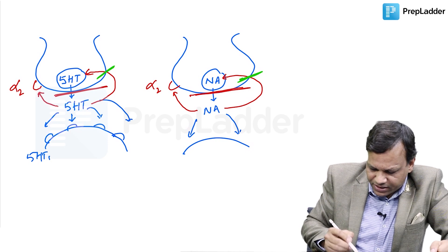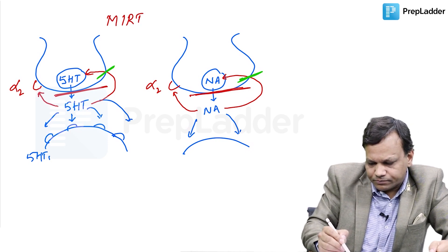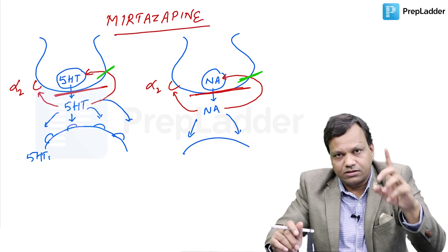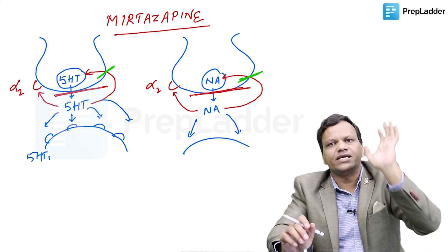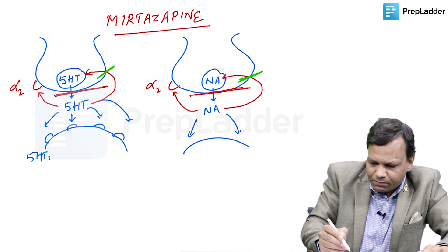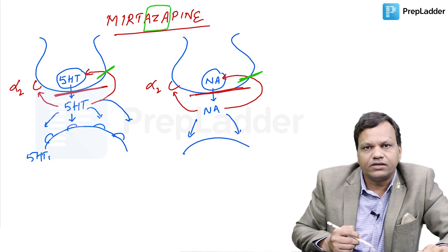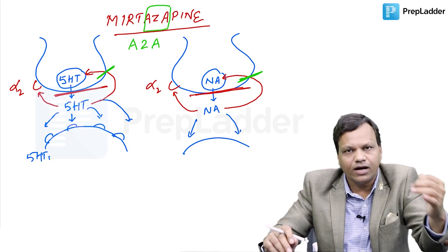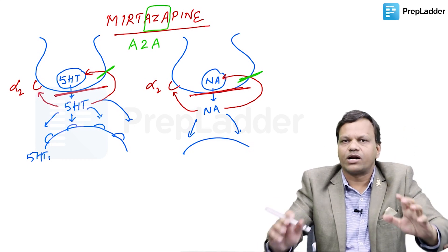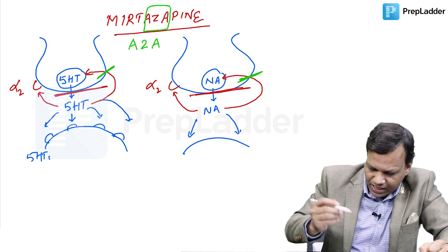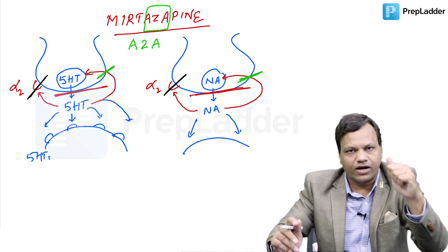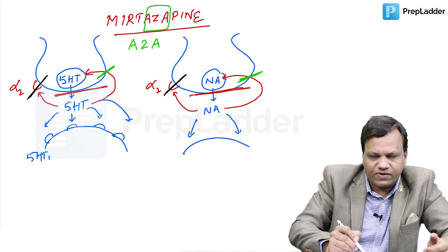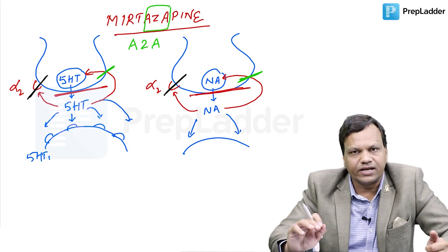But one antidepressant drug which is called Mirtazapine, it is different from other antidepressants in two aspects. The first and foremost aspect is it does not inhibit the reuptake. Rather, Mirtazapine, the name it says, if you see, the name contains AZA. If you see closely, it looks like A2A and you can read that as alpha-2 antagonist. This drug works by blocking the alpha-2 receptors. What will happen when we block alpha-2 receptor? We know alpha-2 acts like a brake. When we block alpha-2 receptor, brake fails. That means, alpha-2 which was inhibiting the serotonin or noradrenaline release, it is not able to do.